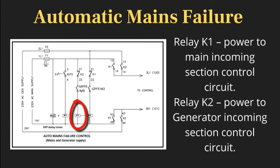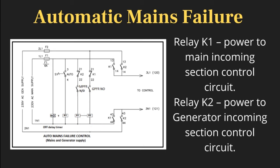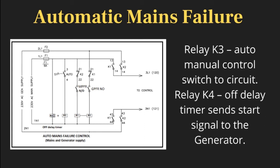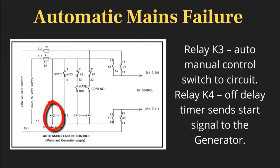Relay K1 provides power to the main incoming section control circuit. Relay K2 provides power to the generator incoming section control circuit. Relay K3 is the auto-manual control switch circuit. Relay K4 is an off-delay timer that sends a start signal to the generator.